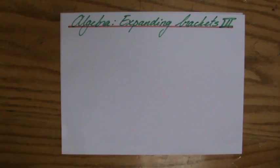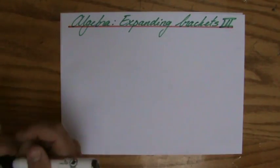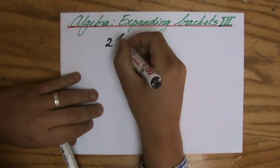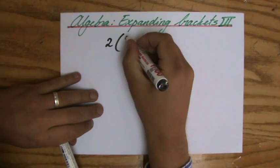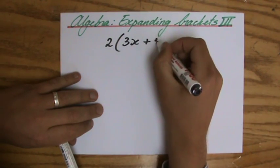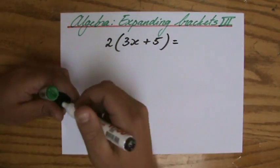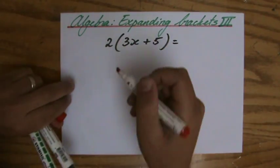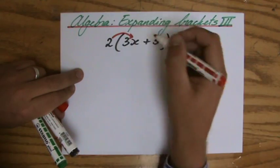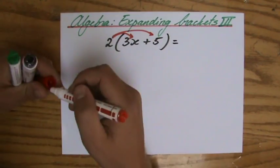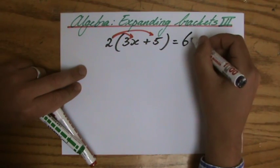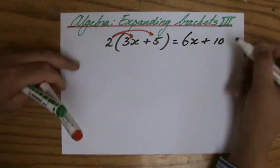Welcome to this last part involving expanding brackets. Just to summarize what we have done so far, we've answered questions similar to 2(3x + 5), where we had to multiply all the terms inside the brackets by 2. So 2 times 3x and 2 times 5. Expanding this expression gives 6x plus 10.